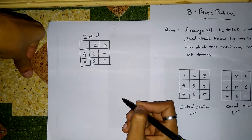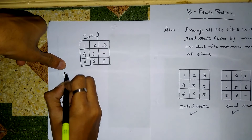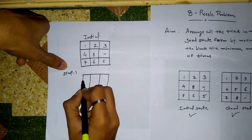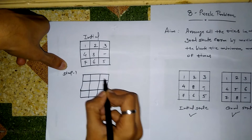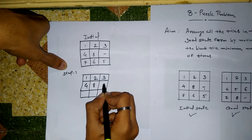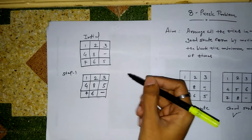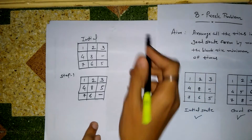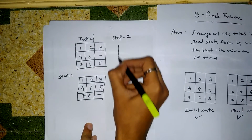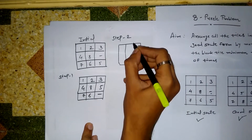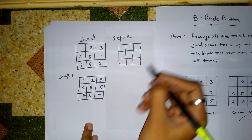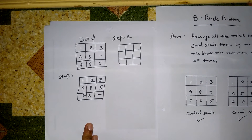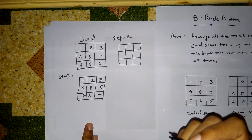By moving the blank tile downwards, the result will be like this — this is step 1. Here we are moving the blank tile downwards, so the resulting state will be like this. Now in step 2, we move the blank tile to the left side. Here we are trying to reach the goal state by moving the blank tile a minimum number of times.